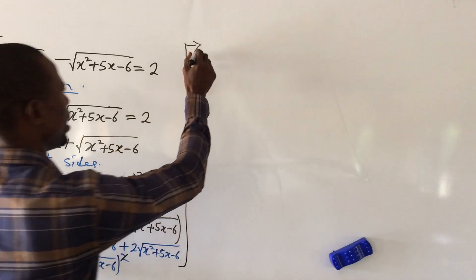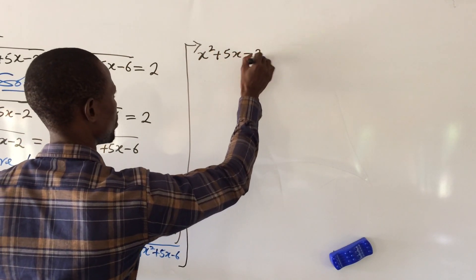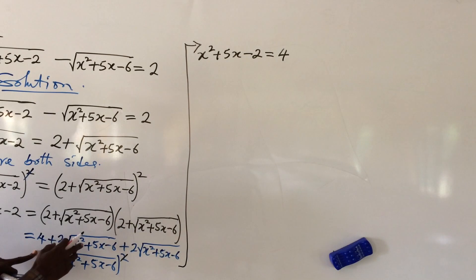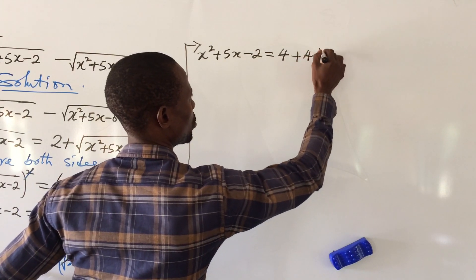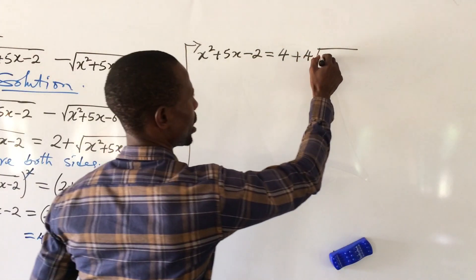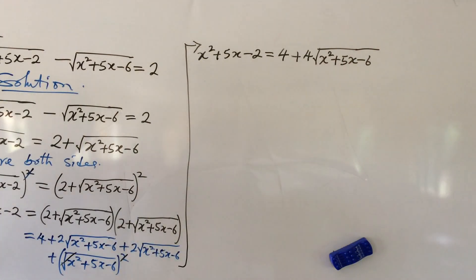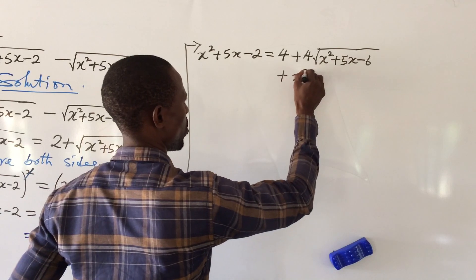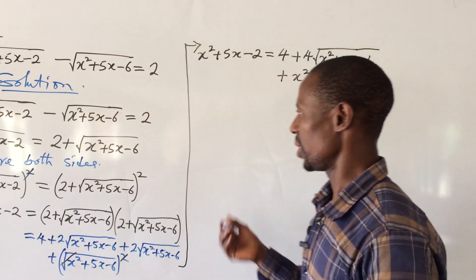So from here, the left-hand side we still have x squared plus 5x minus 2, equal to 4 plus 4 root of x squared plus 5x minus 6, plus x squared plus 5x minus 6.